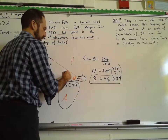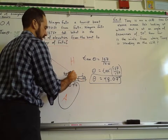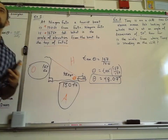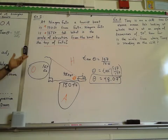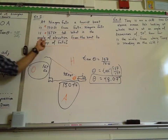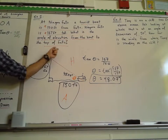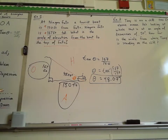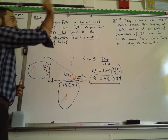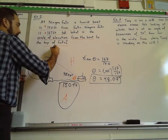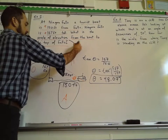What's nice about this — maybe part of last night's homework being confusing is you had to find everything. Last night's homework asked you to find every angle, every side. With the word problem, we know what we're looking for. What is the angle of elevation from the boat to the top of the falls? 48.07. That's the angle of elevation.